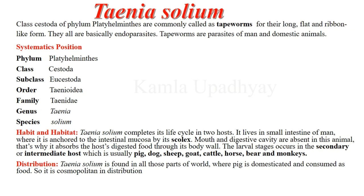Cestoda are called tapeworms because they are endoparasites. In class Eucestoda, those worms are included whose body is long ribbon-like, divided into scolex, neck and strobila with many proglottids like Taenia solium, and larvae with six hooks. Its systematic position is order Taeniidae, also called Cyclophyllidea, meaning those animals having scolex with four large deep suckers and hooks, lobed ovaries, and a blind uterus. Its genus is Taenia and species is solium.